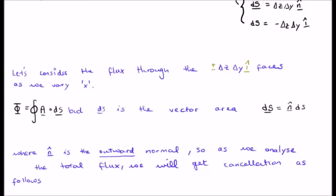N hat is the outward normal. So as you analyze the total flux we're going to get some cancellation and I'm going to describe that right now.